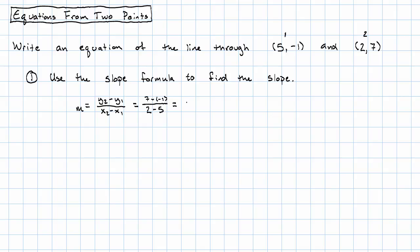So I'll have 7 minus negative 1 is 8. 2 minus 5 is negative 3. My slope is going to be negative 8 thirds.